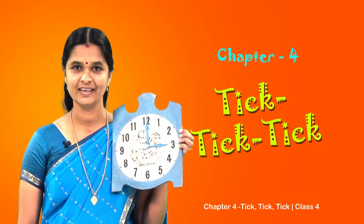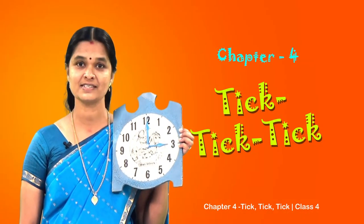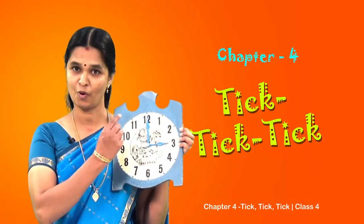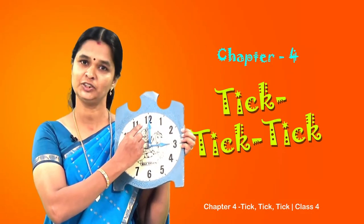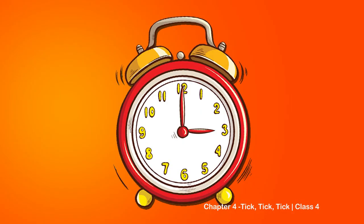Now let us see how to read the time. In third standard you have already studied that if the minute hand points towards twelve, it shows a complete hour. Now in this clock the minute hand points towards twelve and the hour hand points towards three, so the time shown in this clock is three o'clock.